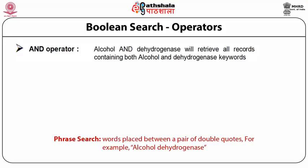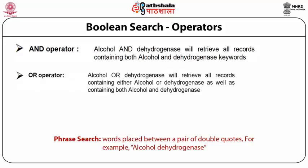The second operator, the OR operator, directs the database to find all those records which contain either search term separately, in addition to all those records which contain both terms. This is equivalent to union in the Venn diagram. For example, entering 'alcohol OR dehydrogenase' in the search text box will retrieve all records containing either alcohol or dehydrogenase, in addition to all records containing both alcohol and dehydrogenase.